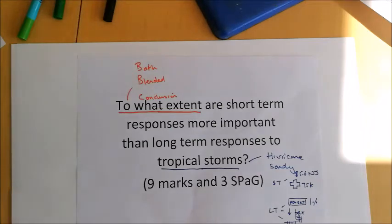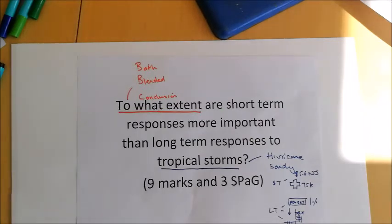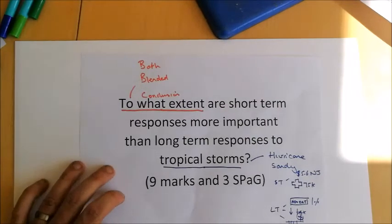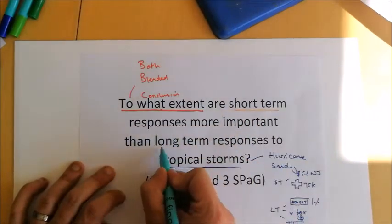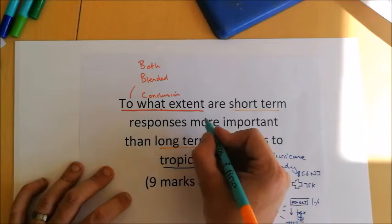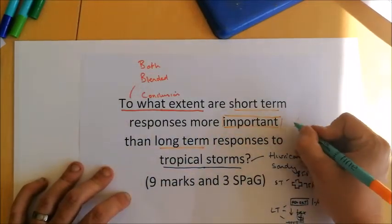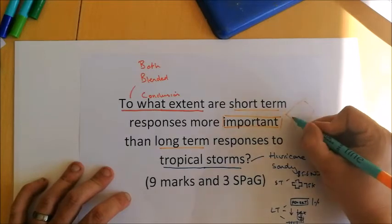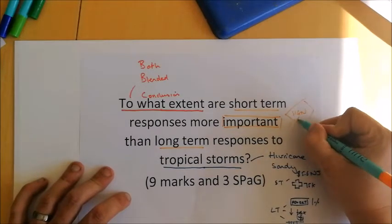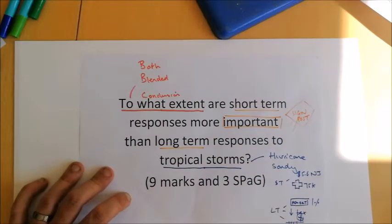The next thing to look for is what I call signposting words — words in the question that we'll use regularly to structure our answer. Short-term and long-term are obvious ones, but also the word 'important.' That's a signposting word we'll want to use, or derivatives of it like 'importance' or 'importantly,' throughout our answer.